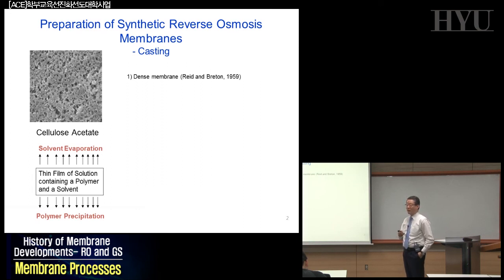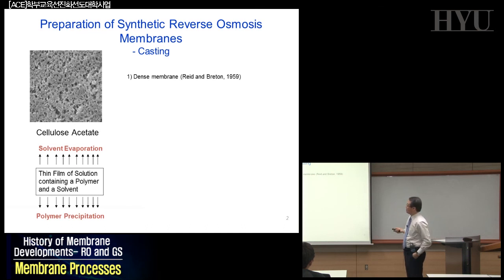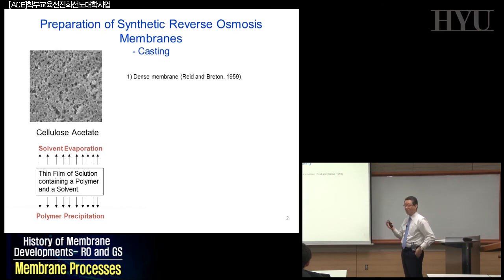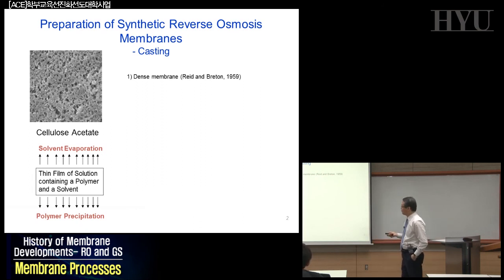Back in the 1950s, there were two very big research areas: obtaining drinkable water from seawater, and the space program. There was huge funding to support whether we could get drinkable or industrial water from seawater, since almost 70–80% of the earth is covered by seawater. That was one of the inspirations for the development of the reverse osmosis membrane. The first membrane was developed by researchers at the Office of Saline Water.